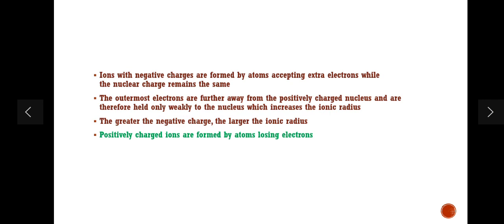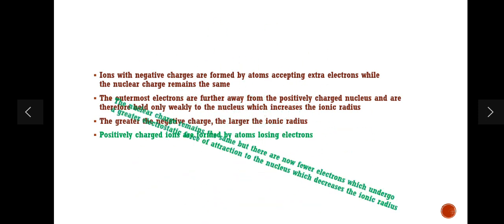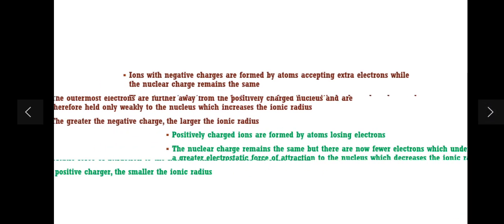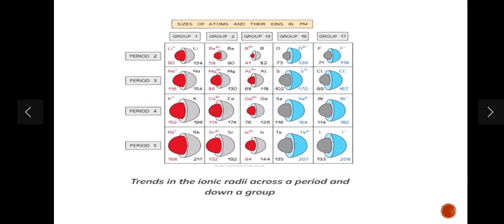Moving on to positively charged ions, where ionic radii decrease. Positively charged ions are formed by atoms losing electrons, and the nuclear charge remains the same. Compared to negative ions, there are now fewer electrons, which undergo a greater electrostatic force of attraction to the nucleus, which decreases the ionic radius. So we can deduce that the greater the positive charge, the smaller the ionic radius.